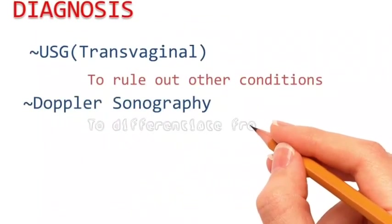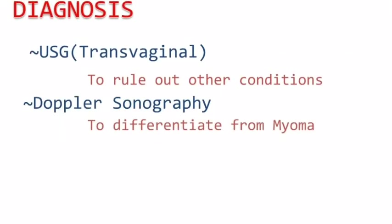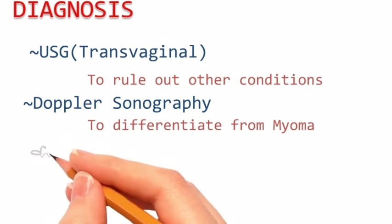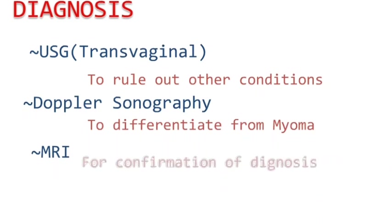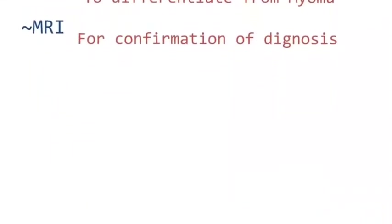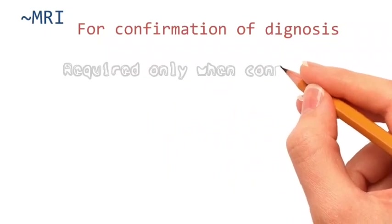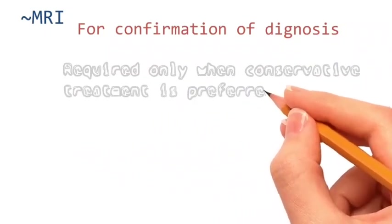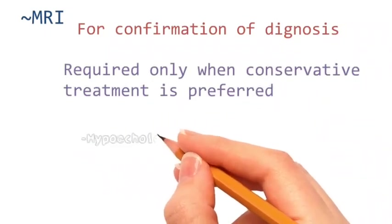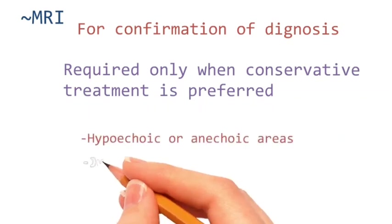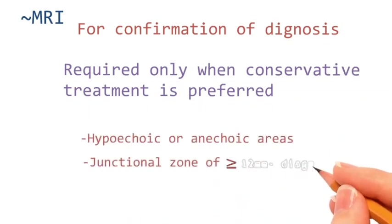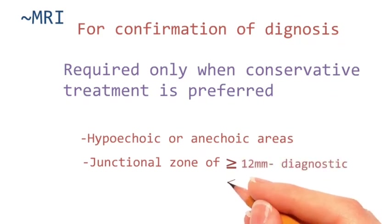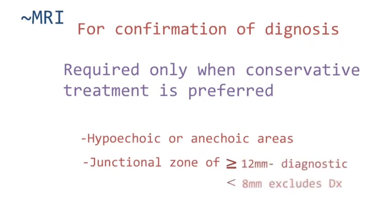Color Doppler sonography is used to differentiate adenomyosis from myoma. MRI is done for confirmation of the diagnosis, but is required only when conservative treatment is preferred. Hypoechoic or anechoic areas may be seen; a junctional zone of greater than or equal to 12 millimeters is diagnostic, and less than 8 millimeters excludes the diagnosis.